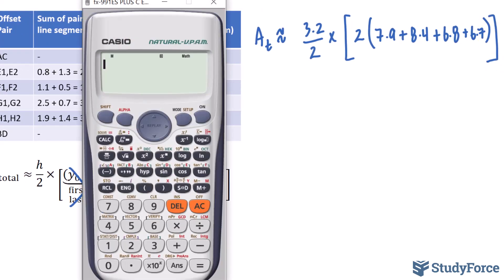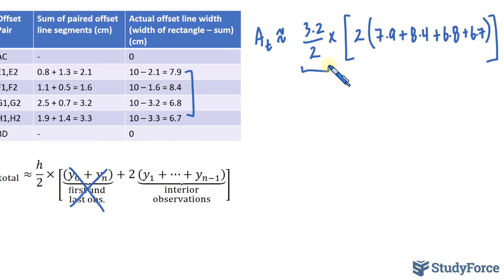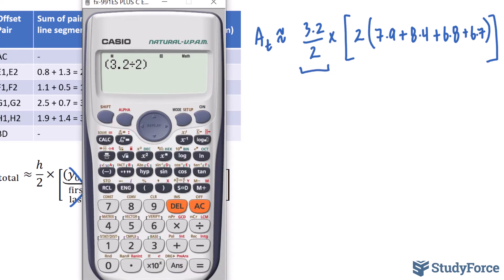Let's use our calculator. We have 3.2 divided by 2. Notice that I'm placing this factor, that fraction, in parentheses. And that's being multiplied by 2, open bracket. And within the parentheses, we have 7.9 plus 8.4 plus 6.8 plus 6.7, close, close. And this gives us an approximate area of 95.36 square centimeters.